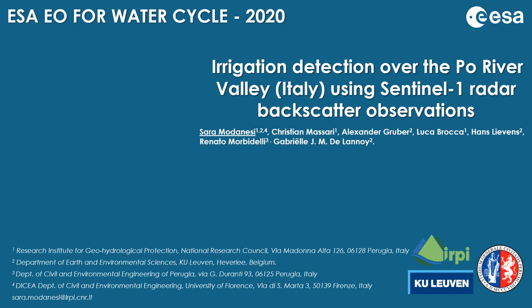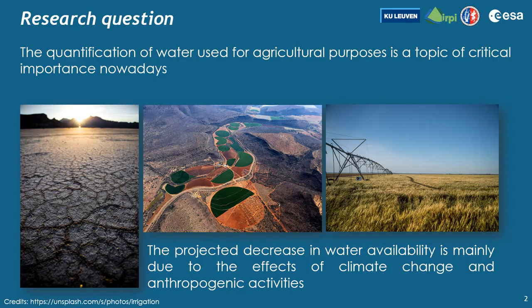Welcome to the digital poster on irrigation detection over the Po River Valley, Italy, using Sentinel-1 radar backscatter observations. The quantification of water used for agricultural purposes is a topic of critical importance nowadays, considering the effects of climate change and anthropogenic activities.